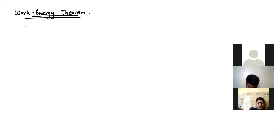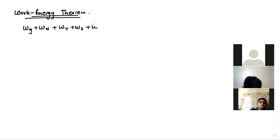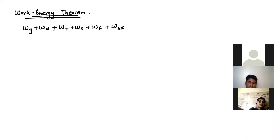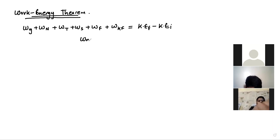We have seen different types of work: work done due to gravity, work done due to normal force, work done due to tension, work done due to spring, work done due to friction, and work done due to kinetic friction. The sum of all these equals final kinetic energy minus initial kinetic energy — that is, the change in kinetic energy.